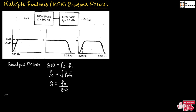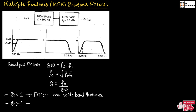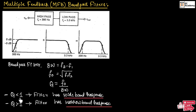Here you need to remember: if the quality factor value is less than 1, then the filter has a wide band response. And if the quality factor value is greater than 1, then the filter has a narrow band response.